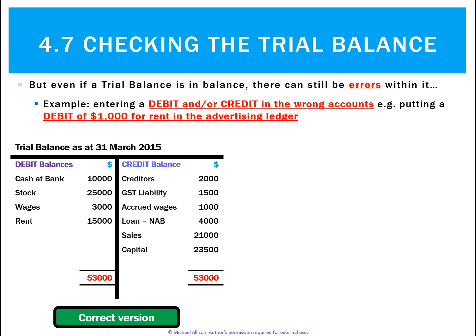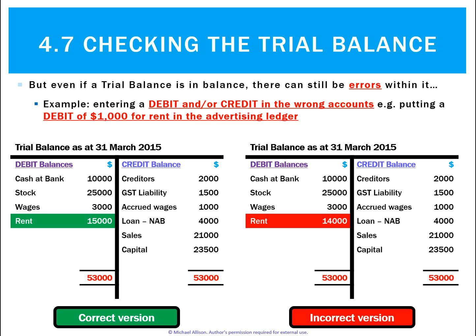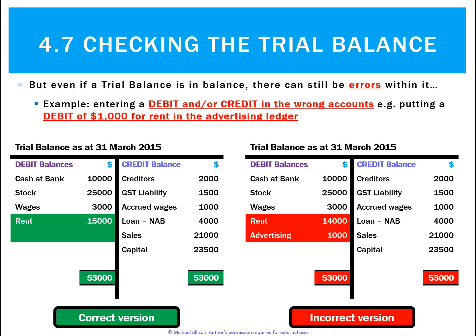What would that look like? Here's the correct trial balance on the left. Rent should be $15,000 but you've only got $14,000 — because you sent $1,000 incorrectly to advertising. In the correct trial balance, advertising should be blank; there shouldn't be any advertising. But in the incorrect trial balance on the right, advertising is $1,000. When you balance it out, the overall balance is still $53,000, which makes it very tough to figure out where you've made a mistake.